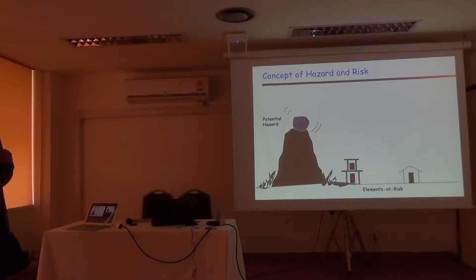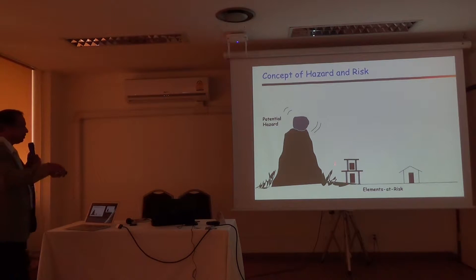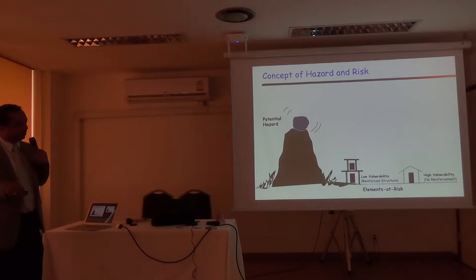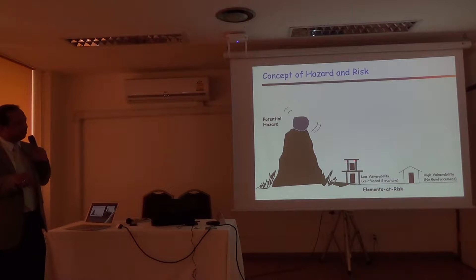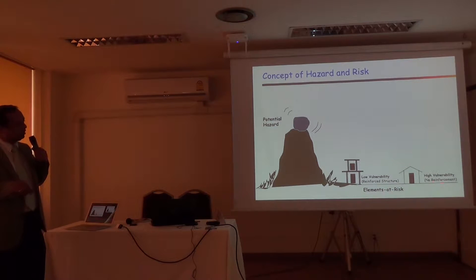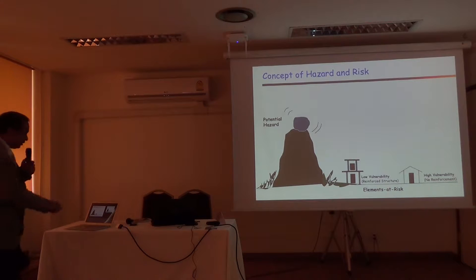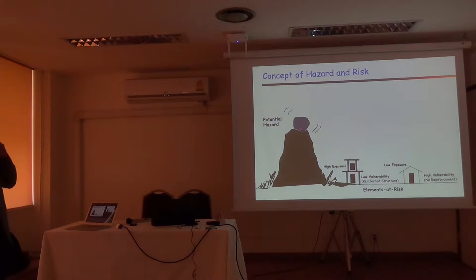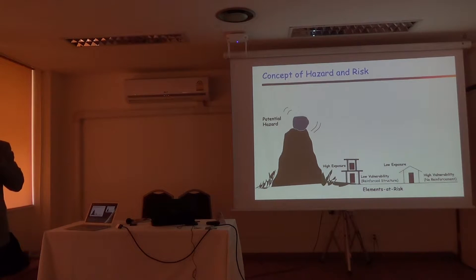These are your elements of risk: buildings, infrastructure, people inside buildings. This is low vulnerability because this is reinforced concrete — even if a stone comes, there will be less damage. But this one is highly vulnerable. This is high exposure because it is close to the hazard source, and this is low exposure because it is away from the hazard. If there is a river nearby, that is high exposure.